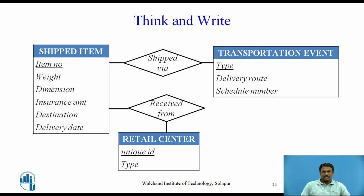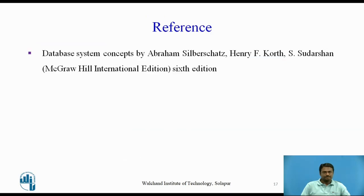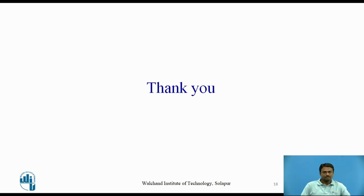This is the answer. Three entities are possible in this problem statement: shipped item, transportation event, and retail centers. Two relationship sets are possible: shipped via and received from, which are drawn in diamond shape. Thank you.